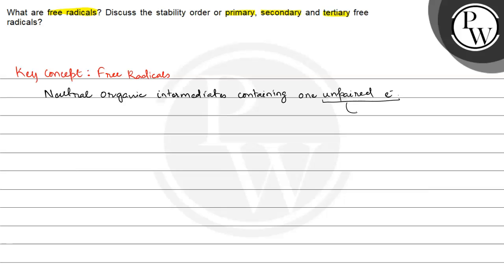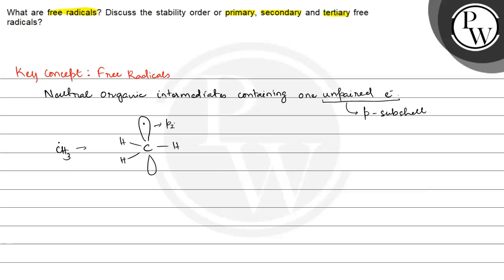This unpaired electron resides in the p subshell. Usually it is present in the p subshell. For the general CH3 free radical, you have one unpaired electron present here — this is the CH3 free radical and this is the pz orbital.